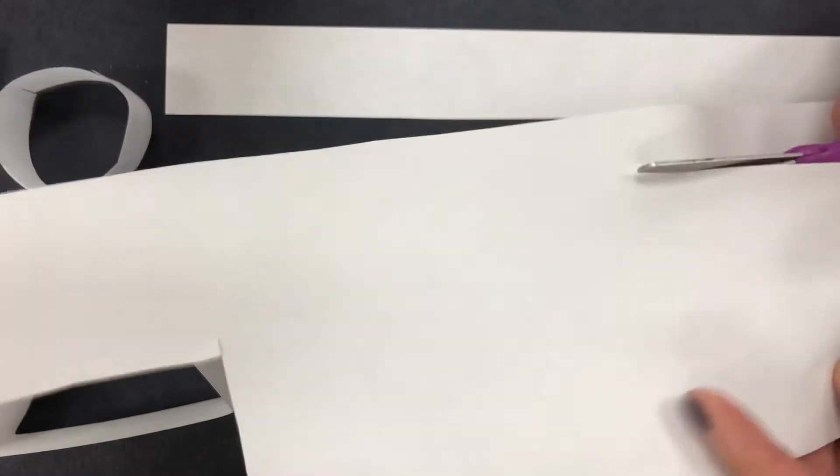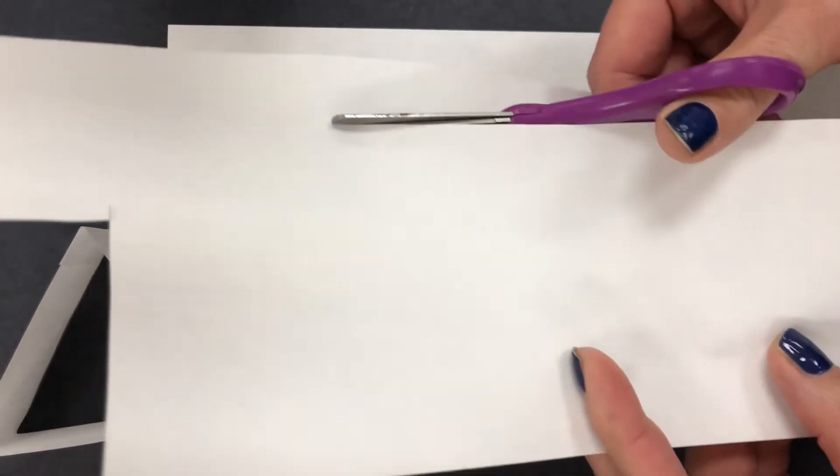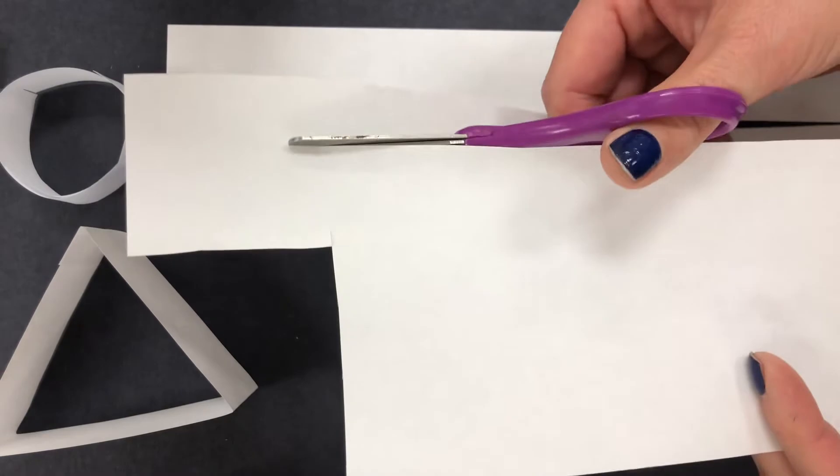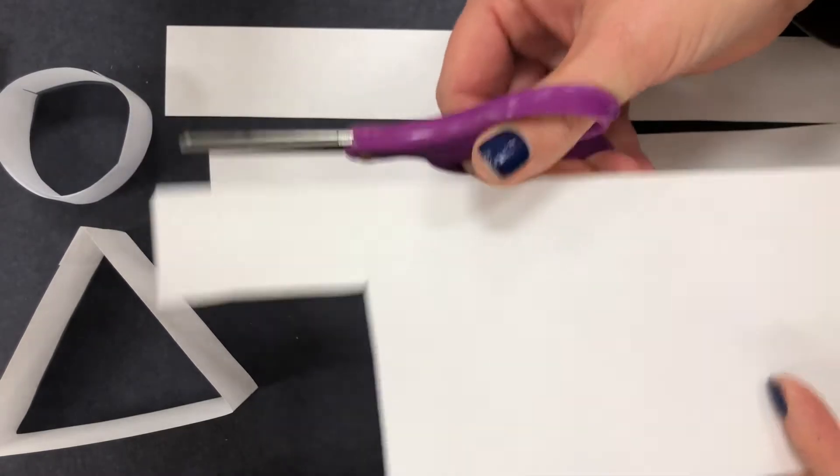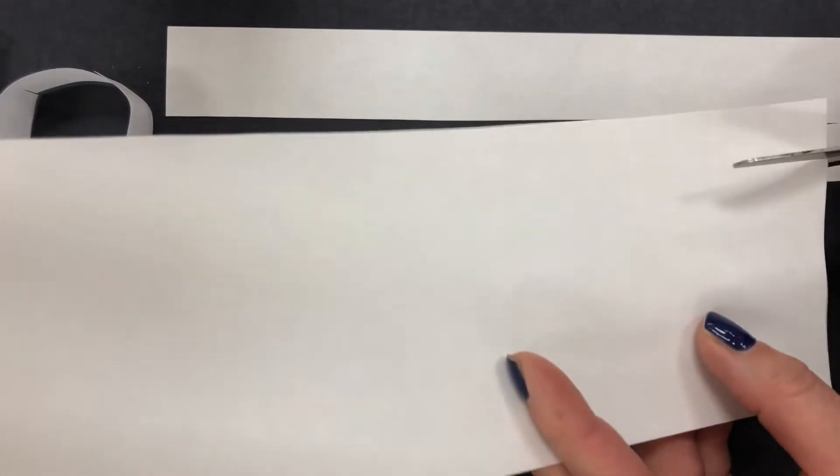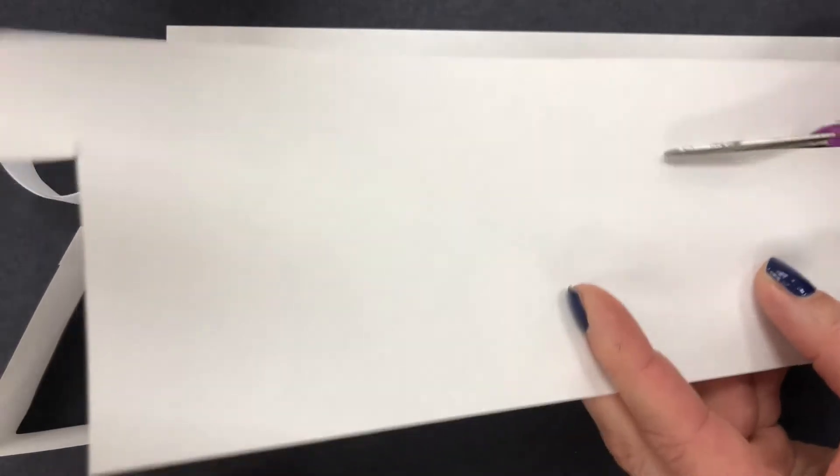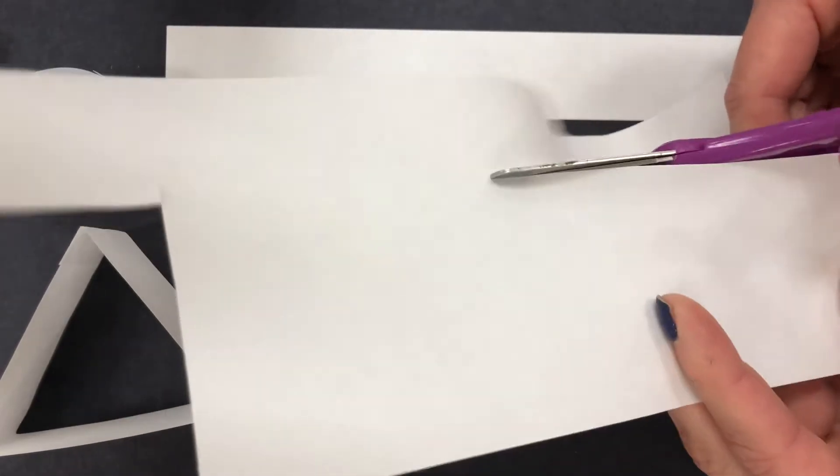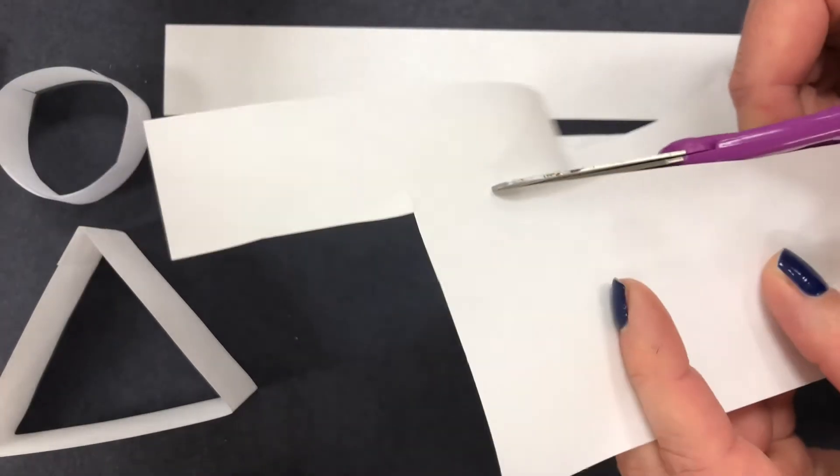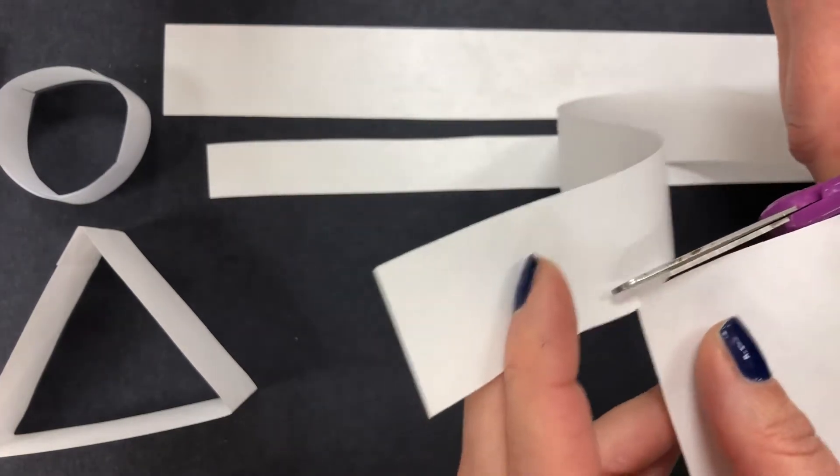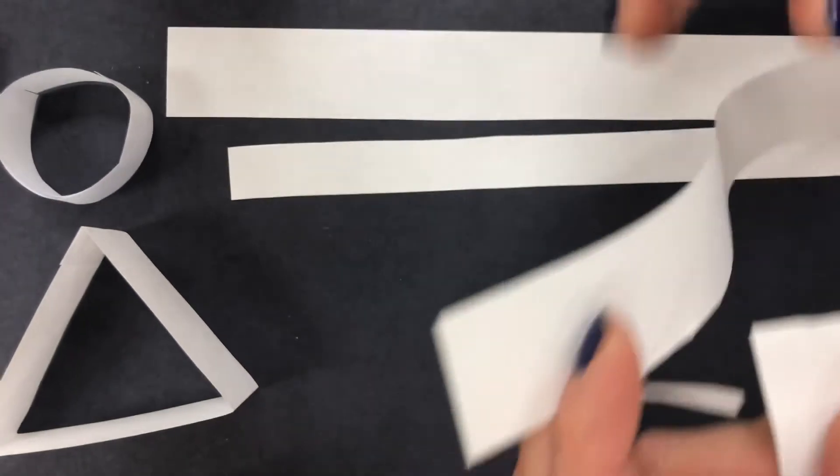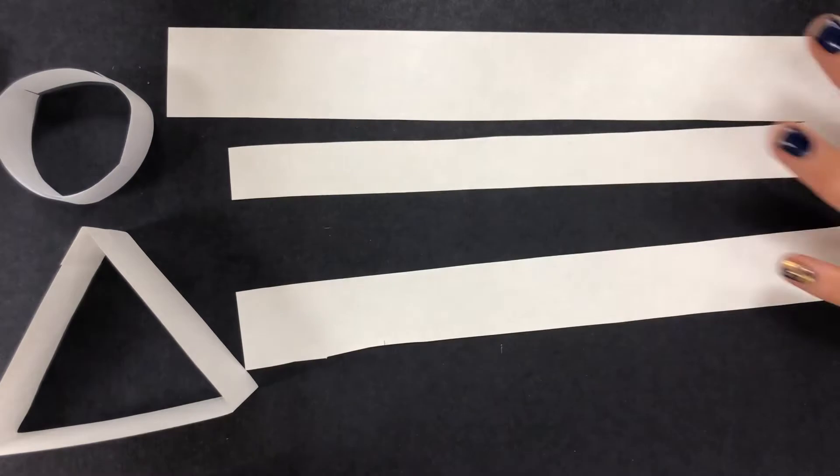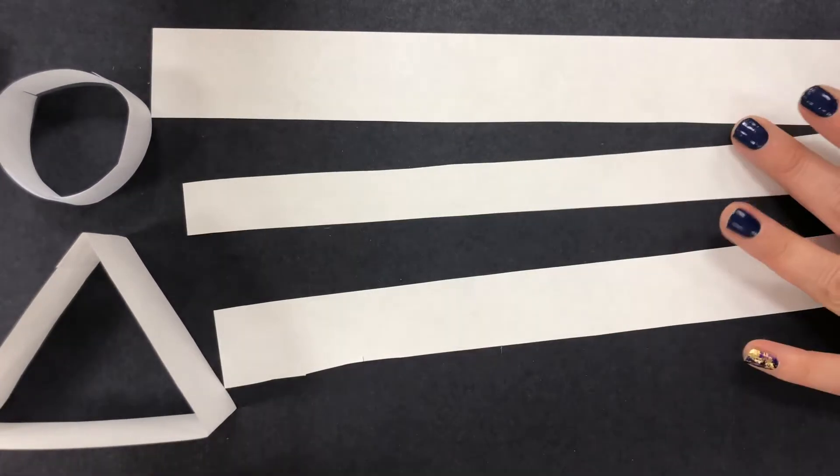If you really want your line to be super straight you can draw the line first, but by keeping my scissors straight ahead I'm able to get a fairly straight line. I've got a few strips of paper here and we're going to start with the triangle.